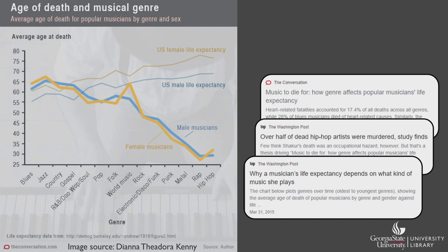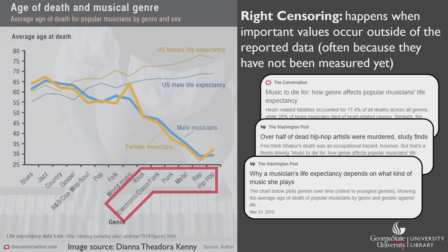Let's take a moment to think about why this chart might be misleading. Which of these musical genres are newer? Disco was popular in the 70s, and hip-hop didn't start getting regular radio airtime until the 80s. That means the musicians in the newer genres are more likely to be younger and still alive. Those who have died — and you would have had to die to make it into this data set — would have likely died quite prematurely since they were younger. This is an example of what is termed right censoring, where important values are missing from the data set. There simply hasn't been enough time since the creation of these musical genres to say anything meaningful about the life expectancies for musicians in newer genres.